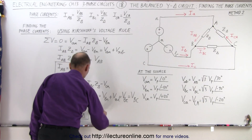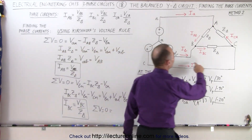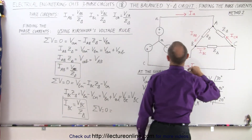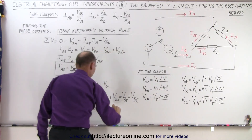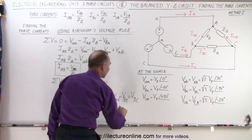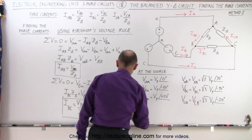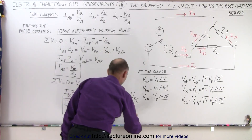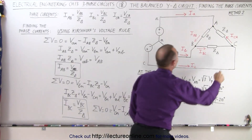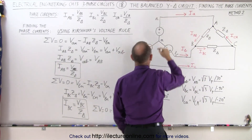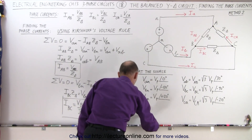The sum of all the voltages should add up to zero. We need a loop traveling through current ICA. We start from N to C, so we have a voltage rise VCN. We come around traveling along the direction of the current — that's a voltage drop — minus ICA times the impedance. Then we travel from A back to N, which is a voltage drop, minus VAN.